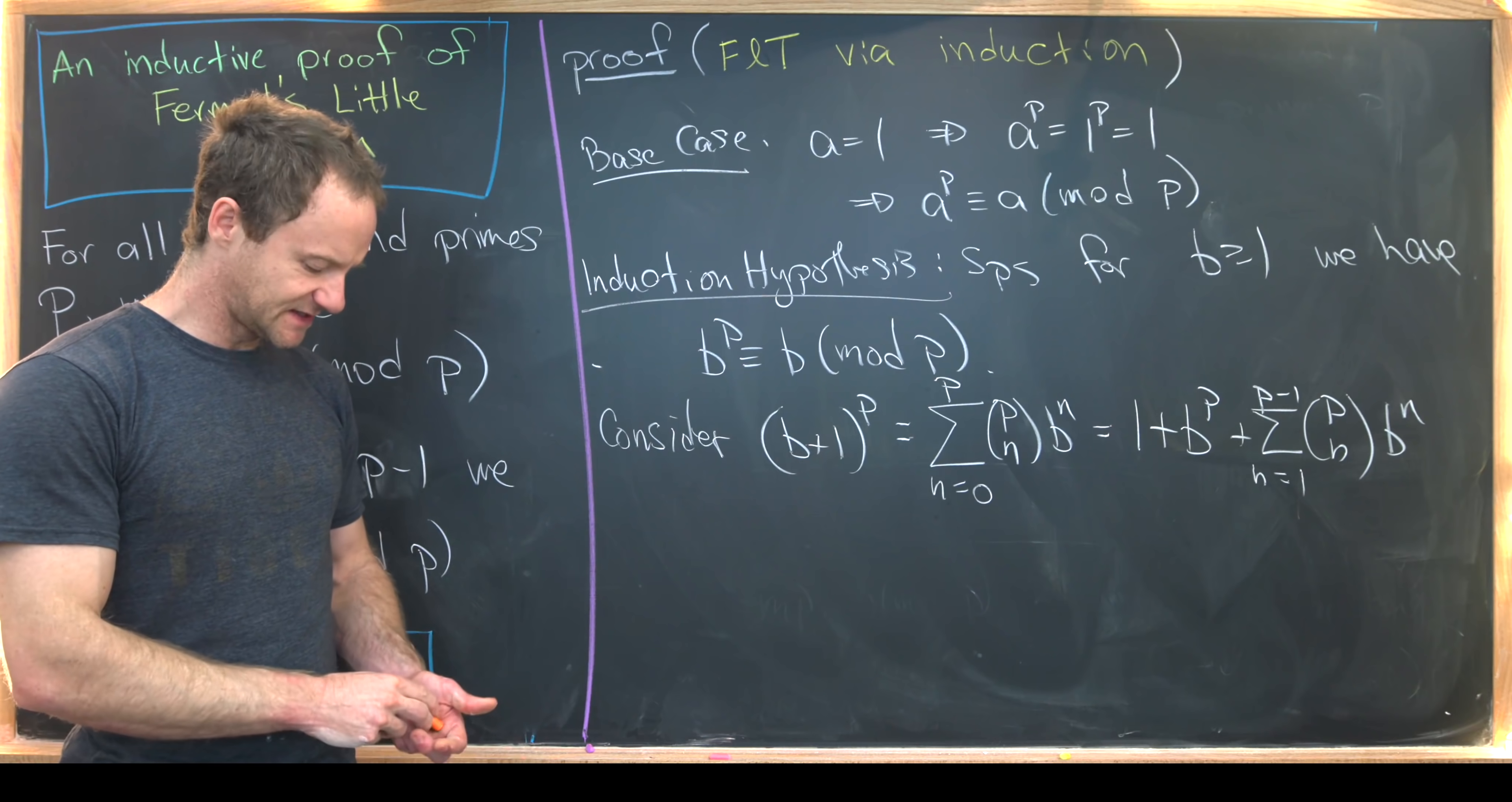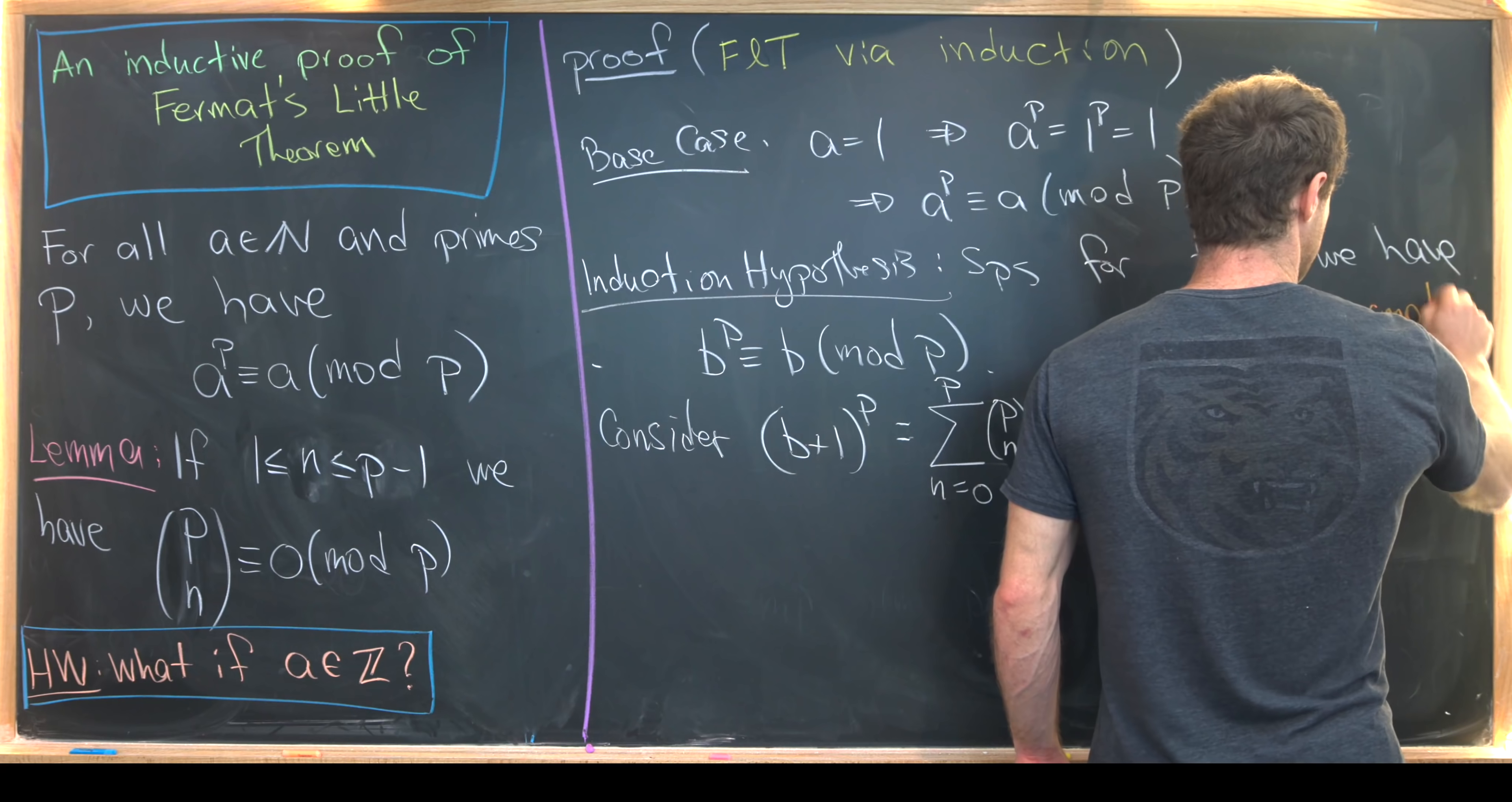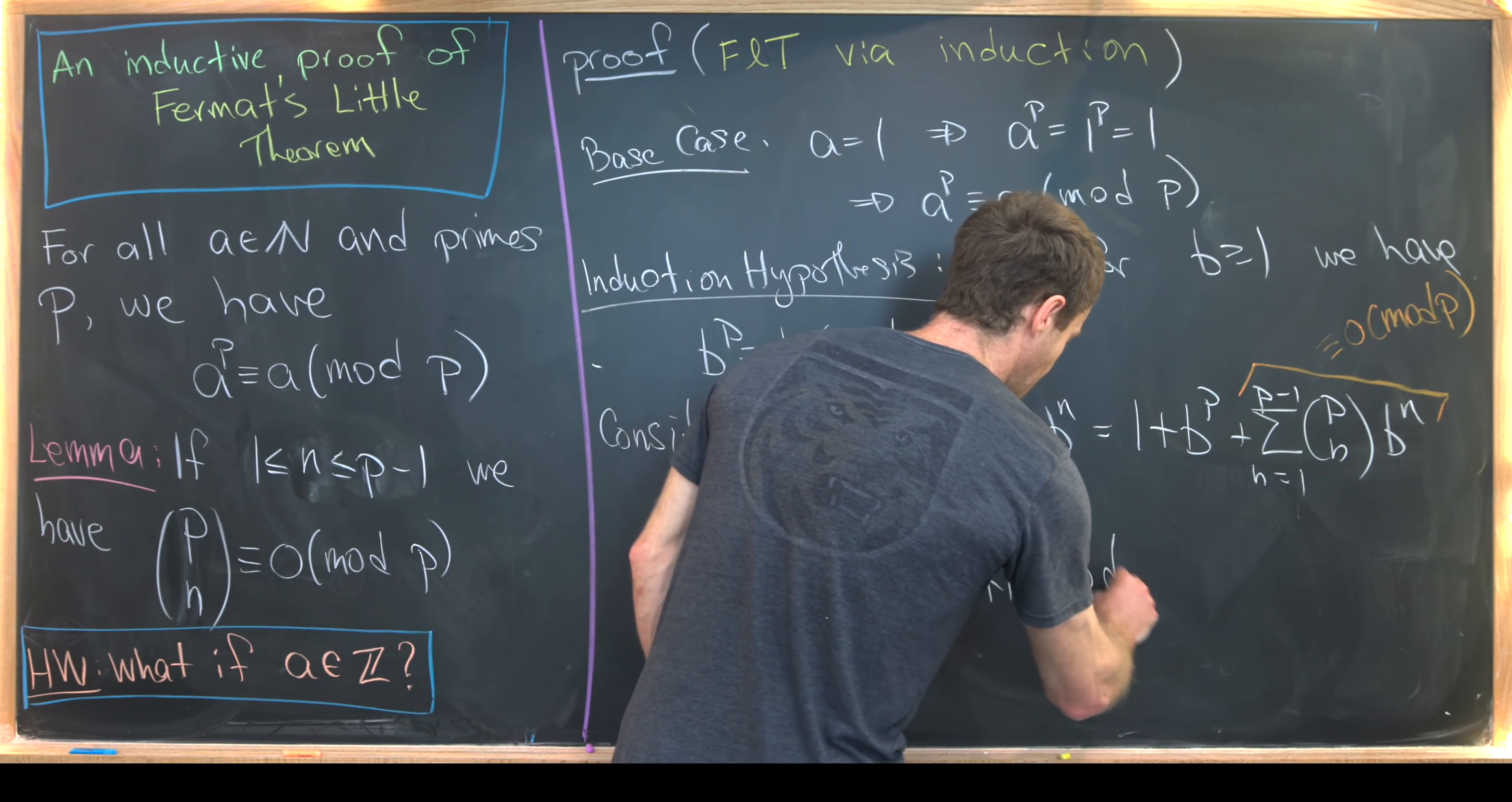But let's see what our lemma shows us. Our lemma tells us that every term from this sum is congruent to 0 mod P. So that means this entire sum must in fact be congruent to 0 mod P. But then our induction hypothesis tells us that B to the P is congruent to B mod P. So that means we can take all of this and write it as B plus 1 mod P.